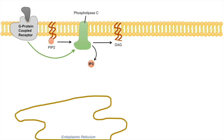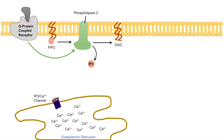IP3 enters into the cytosol while DAG remains associated with the plasma membrane. The endoplasmic reticulum becomes very important in this pathway — there is an IP3 calcium channel located on it, and the endoplasmic reticulum contains high concentrations of calcium. The IP3 liberated from PIP2 travels and binds to that IP3 calcium channel, opening it and allowing calcium to travel down its concentration gradient from the endoplasmic reticulum into the cytosol, so cytosolic calcium levels begin to increase.